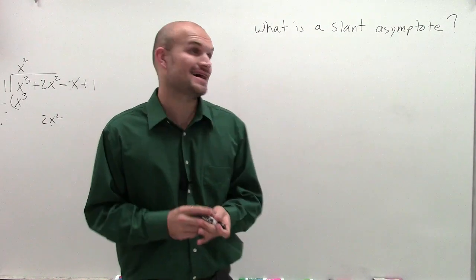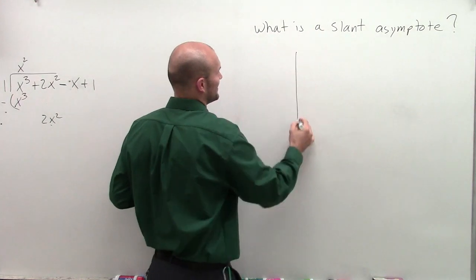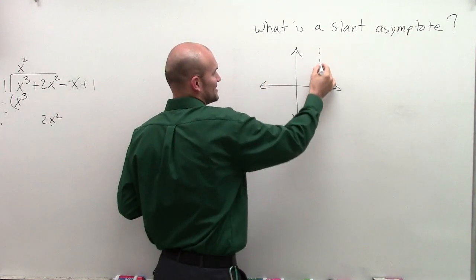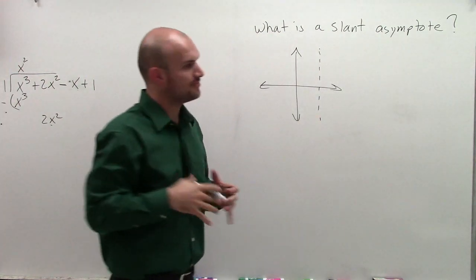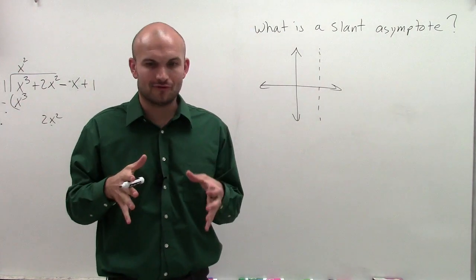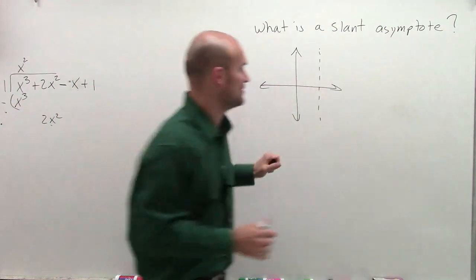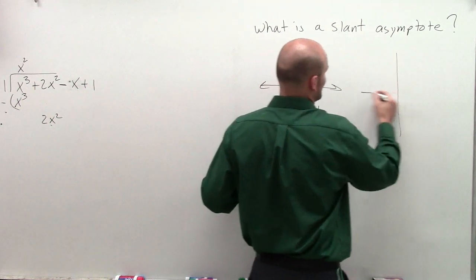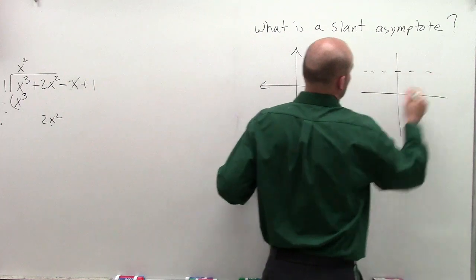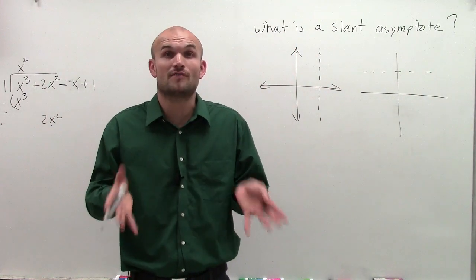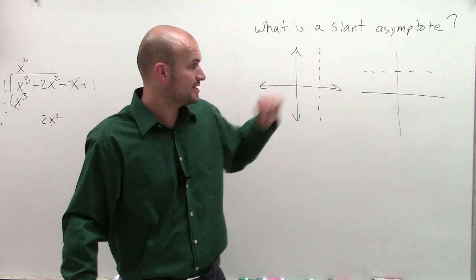So far we've talked about vertical and horizontal asymptotes. If we're looking at it, remember, a vertical asymptote is going to be a vertical line that our function approaches vertically. A horizontal asymptote is the same thing where our function approaches a value, but horizontally.